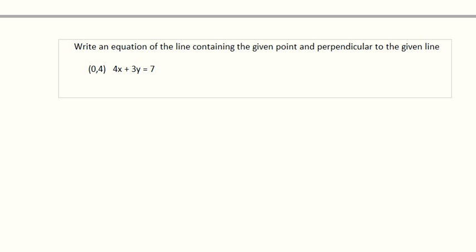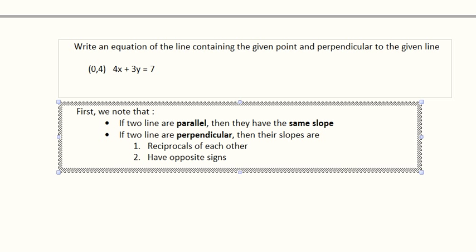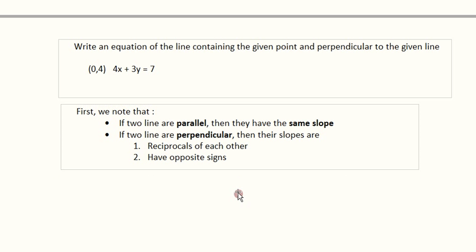Here again we're dealing with perpendicular lines, so let's recall that if two lines are parallel, they have the same slope. And what we're interested in for this problem is that if two lines are perpendicular, then the slopes are reciprocals of each other, and they have opposite signs.